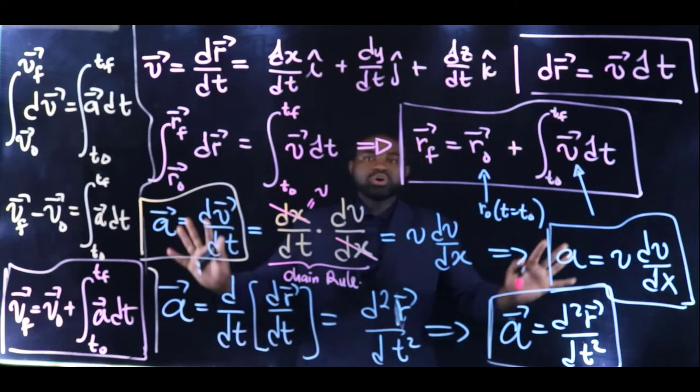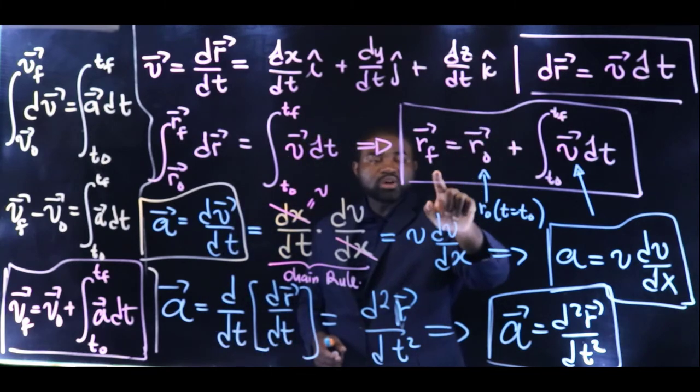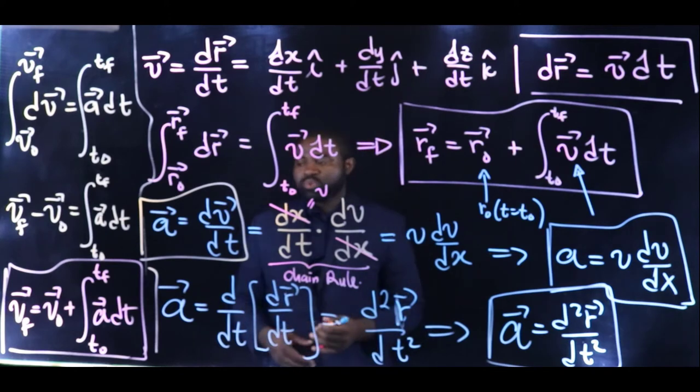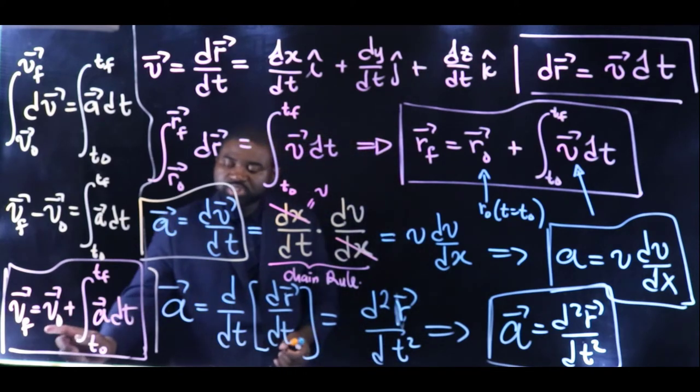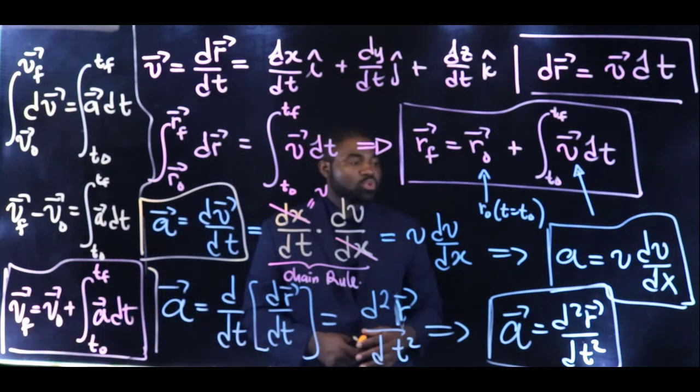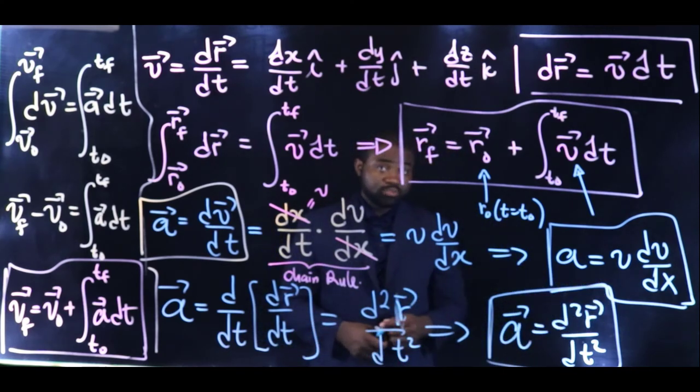So right here on the board, we have the general expression that describes how the position of the particle varies with time along the plane. We have the general expression that describes how the velocity of the particle varies with time along the plane, as well as we have some cool equations for a that will help us to analyze any motion.